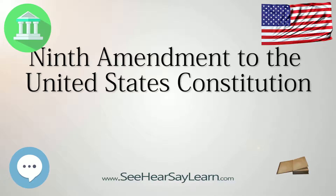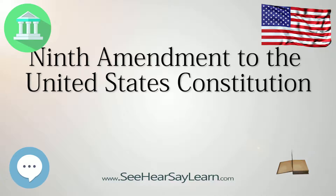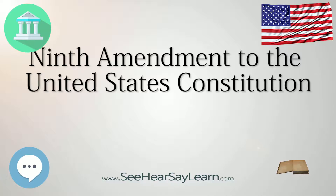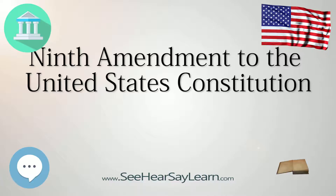It has been objected also against a Bill of Rights that, by enumerating particular exceptions to the grant of power, it would disparage those rights which were not placed in that enumeration, and it might follow by implication that those rights which were not singled out were intended to be assigned into the hands of the general government, and were consequently insecure.